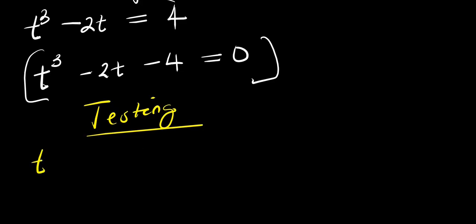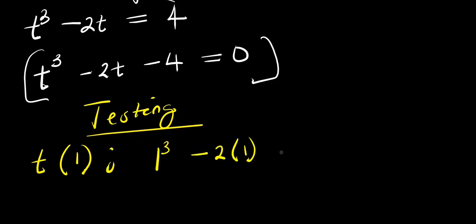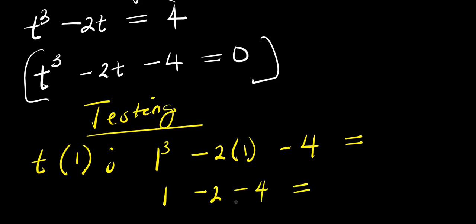Starting with t = 1: substituting in gives 1³ − 2(1) − 4 = 1 − 2 − 4 = −5. This is −5, not 0, so t = 1 is not a solution.